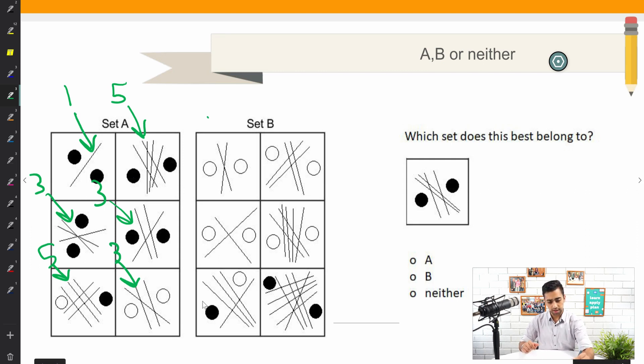And what I notice is I've got two here. Immediately, the first thing I'm thinking is, is the pattern odd number of lines in set A and even number of lines in set B? Let's have a look.